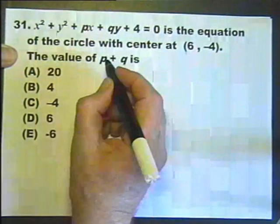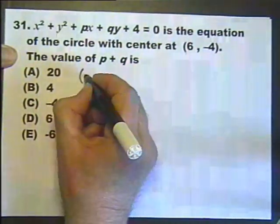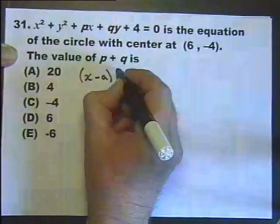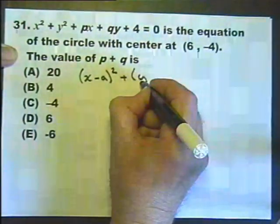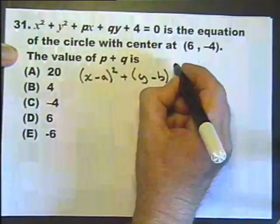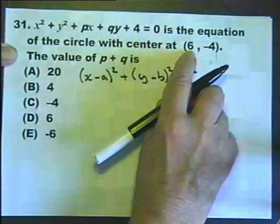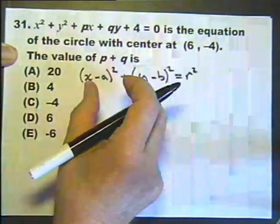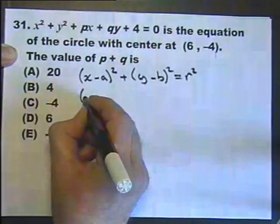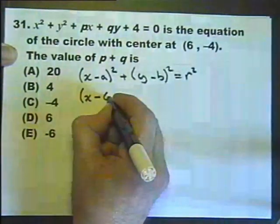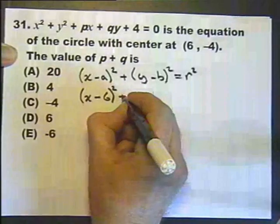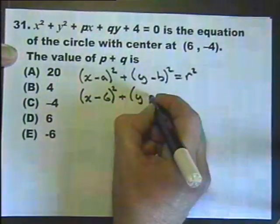So let's write down the general equation for a circle. This is the equation of a circle where the center of the circle is at the coordinate (a,b). In other words that's a and that's b. Let's substitute those values. So we have x minus a which is 6 and y minus minus 4.